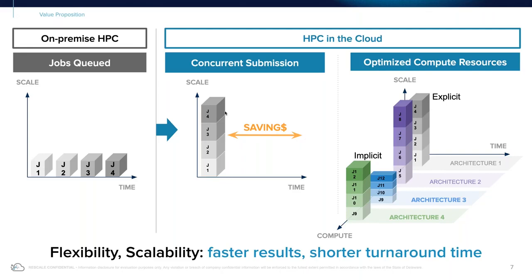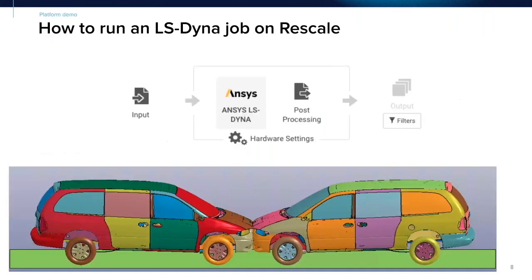This provides a direct dollar savings associated with time savings as well as faster time to simulation results. On Rescale you have multi-cloud options — we've partnered with all different cloud providers, so you can get access to compute-optimized resources. For explicit simulations you can use core types with high clock speed and high interconnect speeds, while for implicit jobs which are more memory bound, you can use a different set of resources with higher memory in that architecture. The end result is getting all your results faster with shorter turnaround time.